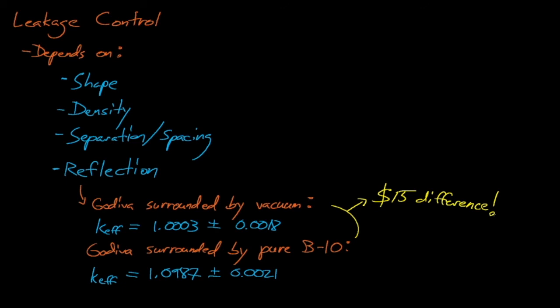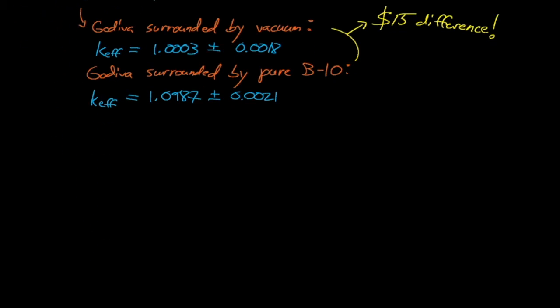Now before we move on to moderation control, it's worth mentioning a concept known as buckling conversion. From diffusion theory, we know that a system will be critical if its geometric buckling equals its material buckling, where the material buckling describes how reactive that material is, and the geometric buckling describes how leaky that specific geometric configuration is. If the geometric buckling is larger than the material buckling, then the system will be subcritical, and if the material buckling is larger, then the system will be supercritical. Now, because the material buckling depends only on the material and its cross sections and not on the shape of the material, two different shapes that are made of the same material will have the same geometric buckling if they are both in a critical configuration.